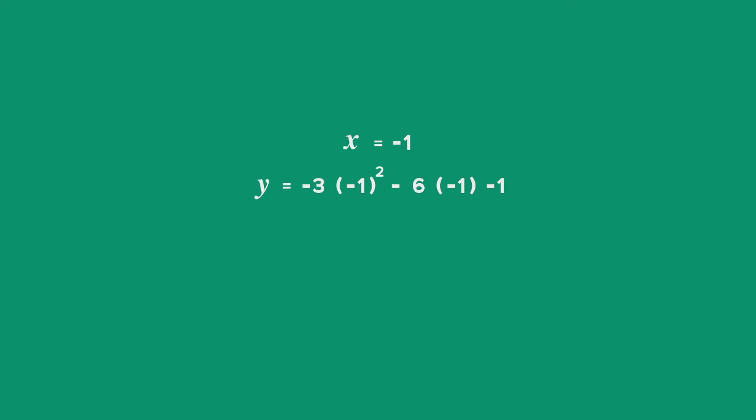y = -3 + 6 - 1. Negative 3 minus 1 is -4, plus 6 gives you y = 2.